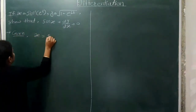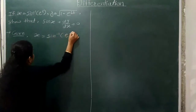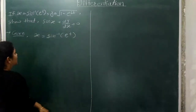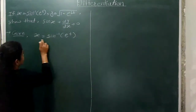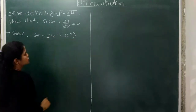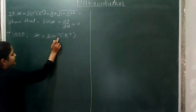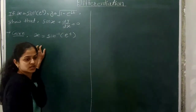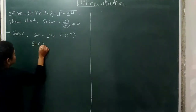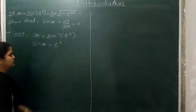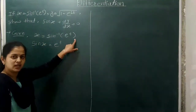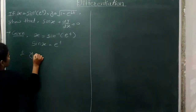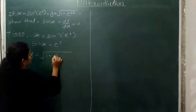Given: x is equal to sin inverse of e raised to t, and y is equal to under root of 1 minus e raised to 2t. We simplify x first. Since x equals sin inverse of e raised to t, moving sin to the right hand side gives sin x equals e raised to t.